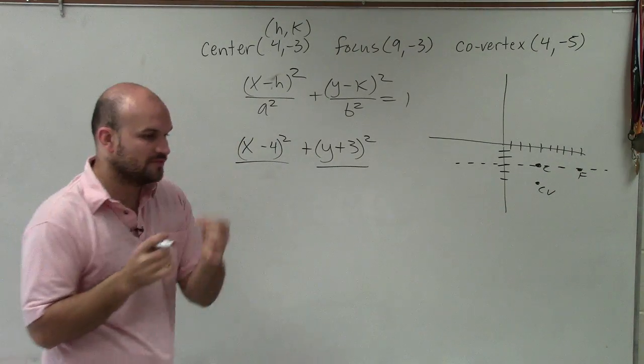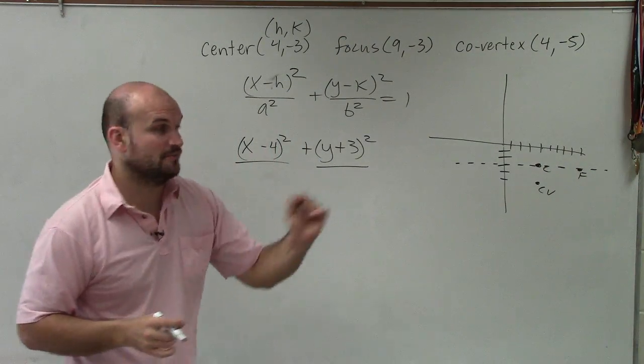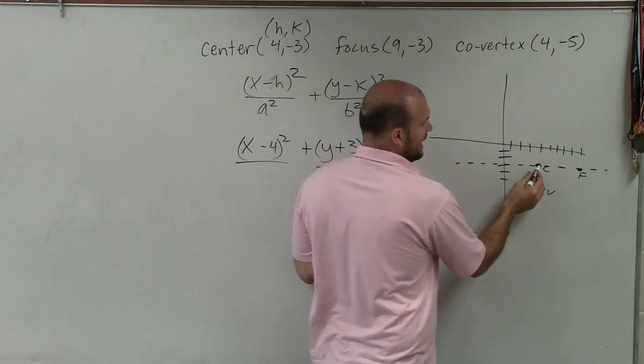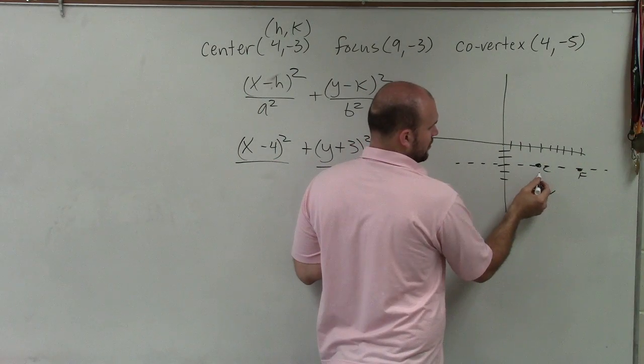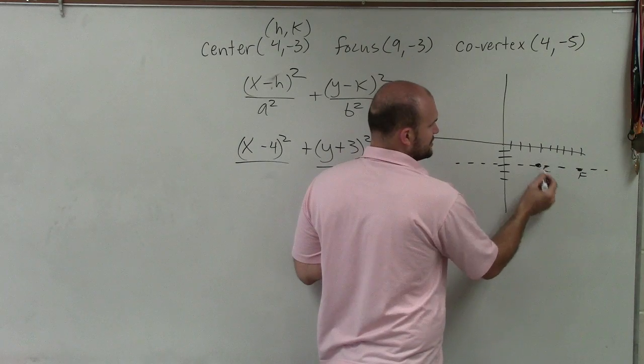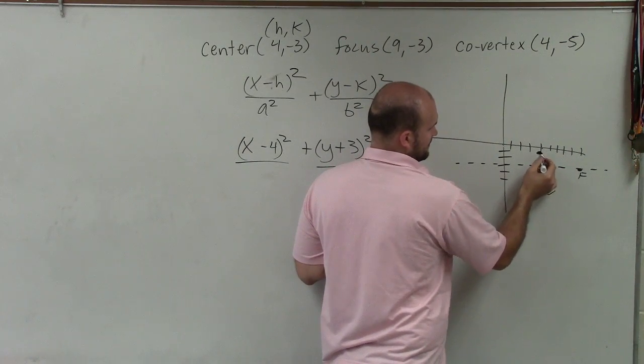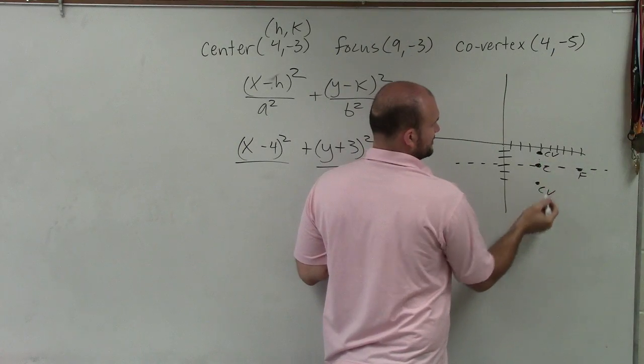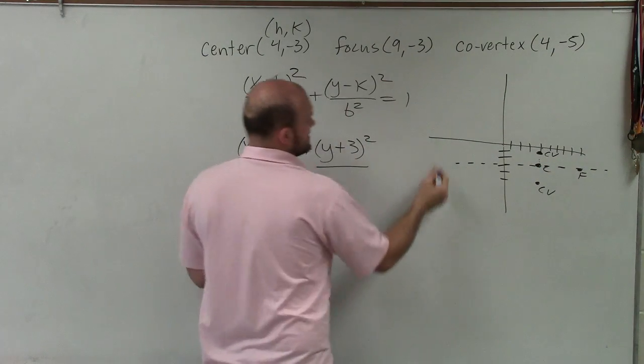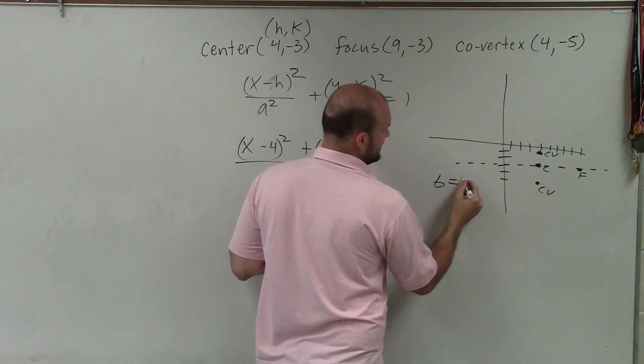And now we need to determine what a squared and b squared is. Now, a is the distance from the center to your vertex. b is the distance from the center to your co-vertex. Well, I can simply just see that this is one, two, right? I'm going down 2, and I'd have to go up 2 units to find the other co-vertex. I know it doesn't look similar. So therefore, I can say b is equal to 2.